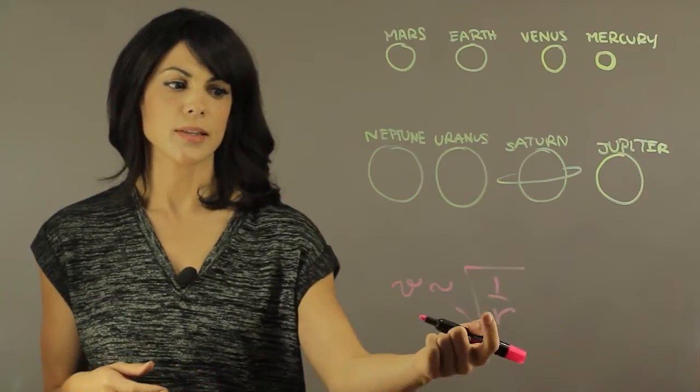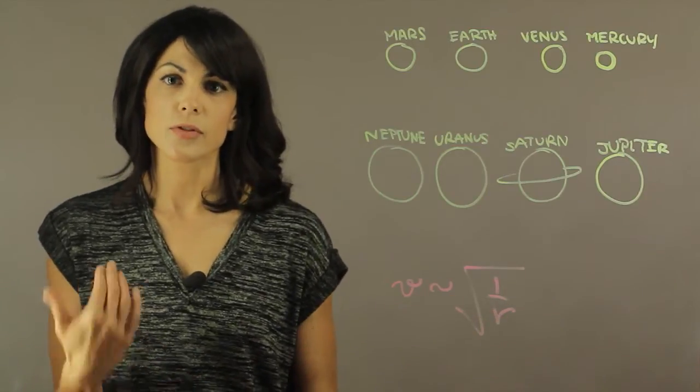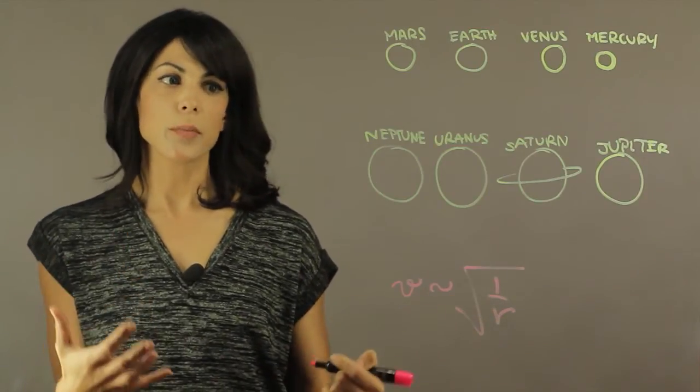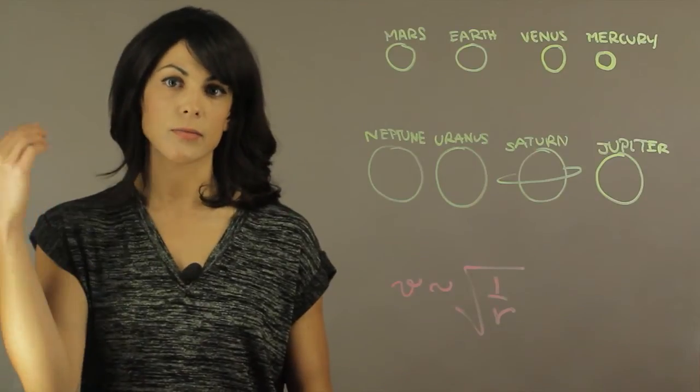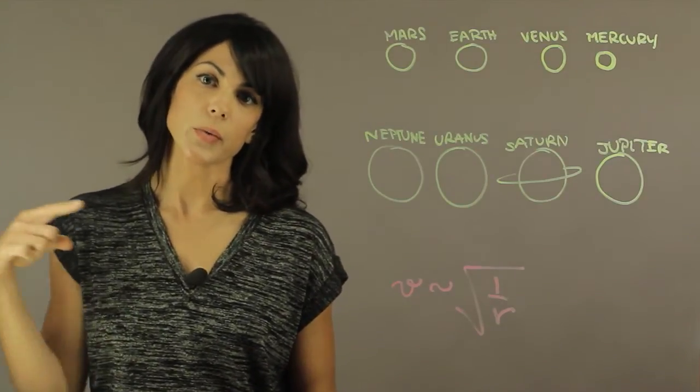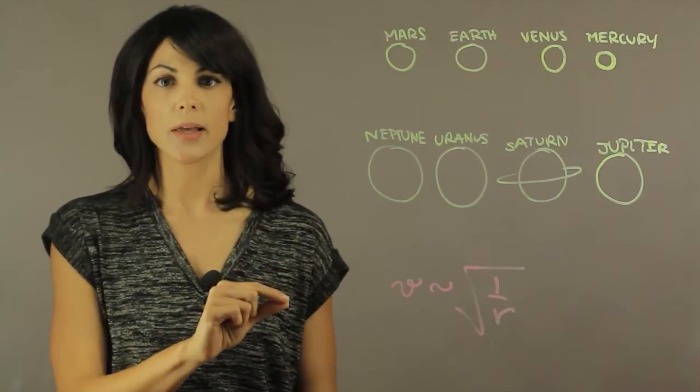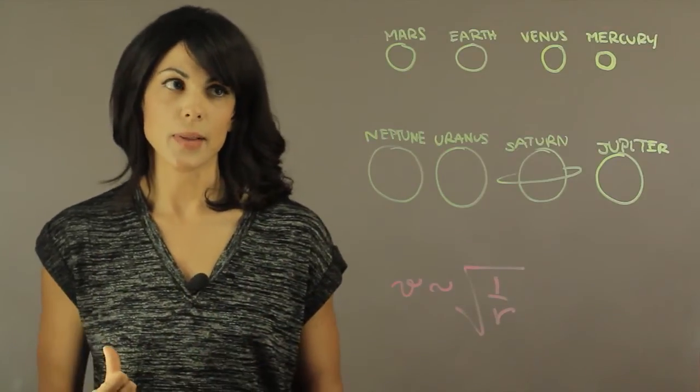So that means that the further they are, the slower they're going to move. So it would make sense if the r is starting from the eighth planet, it would actually increase towards the inner planet. So the inner planets are going faster than the outer planets.